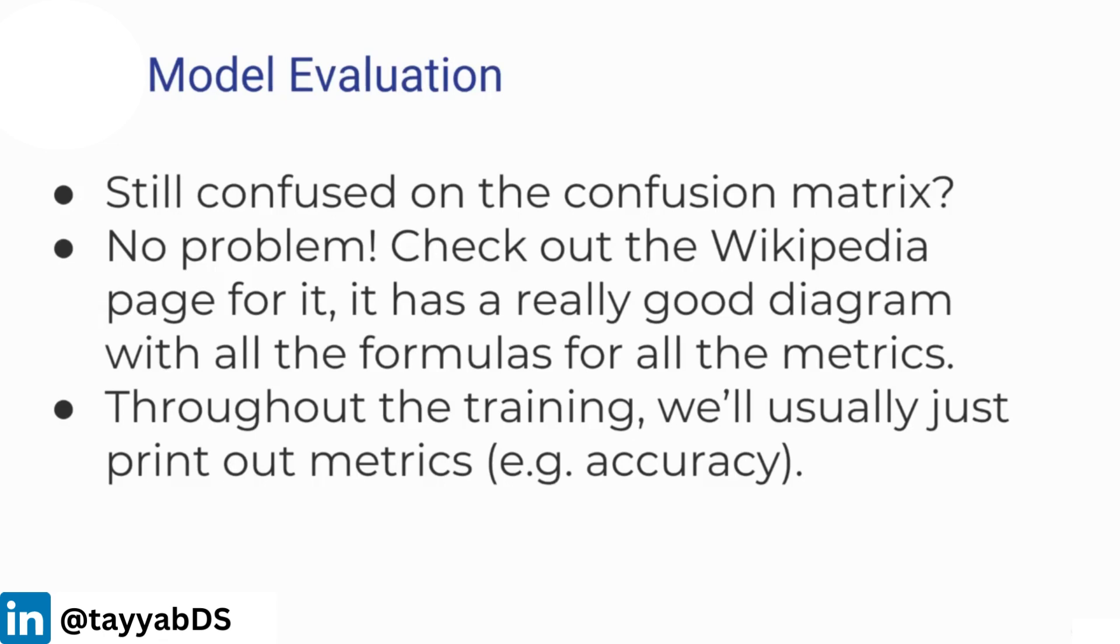If you're still confused on the confusion matrix, don't worry too much about it. I would encourage you to check out the Wikipedia page for it. It has a really good diagram that we saw during this lecture with all the formulas for all the metrics. Throughout the training, what we're going to be doing is just printing out metrics. For example, we'll just print out accuracy or print out a confusion matrix or print out what's known as a classification report, which reports back precision, recall, and F1 score.